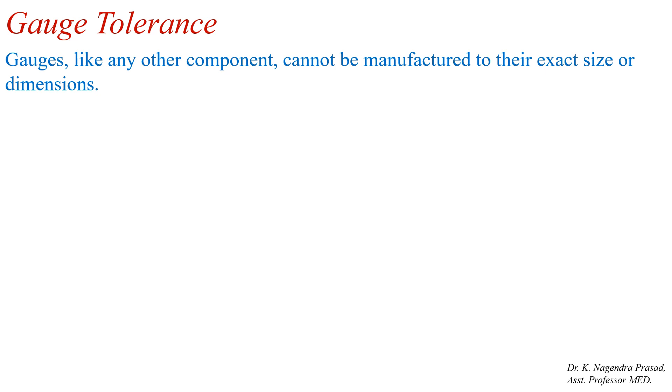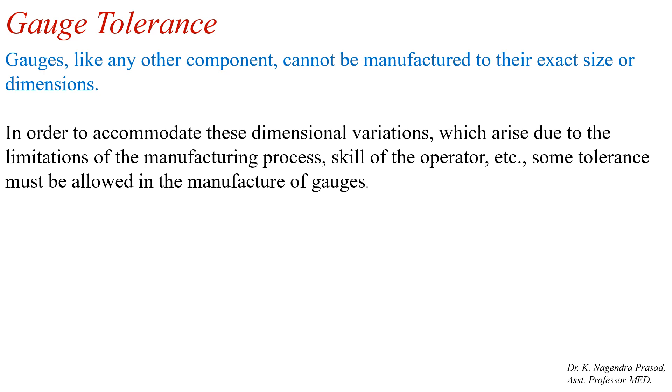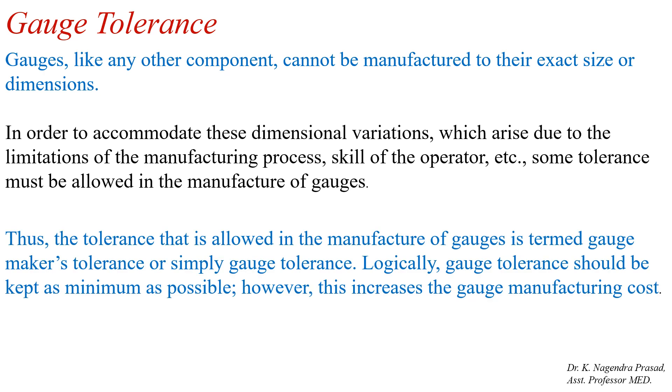In this lecture we will discuss about the tolerances and wear allowances for the gauges. First we will discuss about the gauge tolerance. We know that making a component with exact dimensions is difficult due to the limitations of the manufacturing process. Similarly, gauges also cannot be manufactured with exact sizes. In order to accommodate these dimensional variations, some tolerance must be allowed in the manufacture of gauges. The tolerance allowed in the manufacturing of gauges is termed the gauge maker's tolerance, or simply the gauge tolerance.